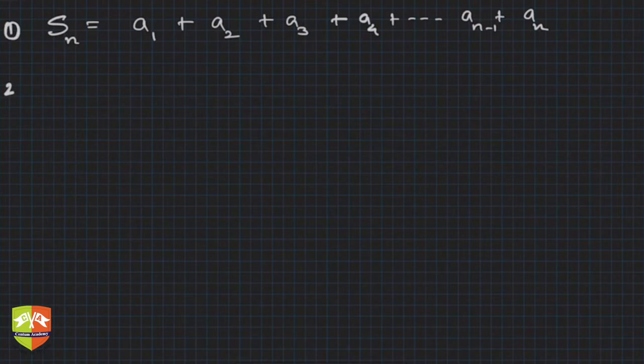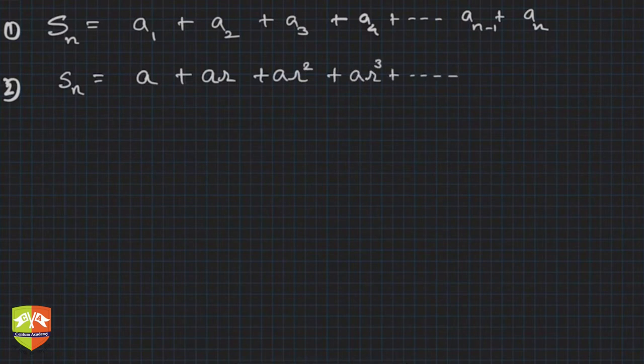Step number 2. Can I write the same Sn as a plus ar plus ar squared plus ar cubed plus like that ar^(n-2) and ar^(n-1)? All of you agree to this? Is step 2 clear?